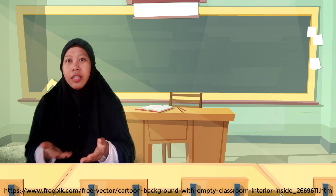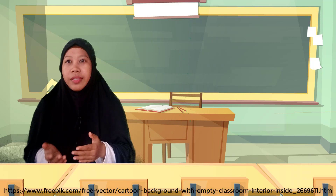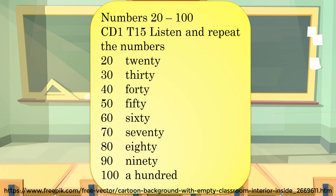Now, let's check the other cardinal numbers between 20 and 100. Listen and repeat the numbers. Twenty, thirty, forty, fifty, sixty, seventy, eighty, ninety, one hundred.